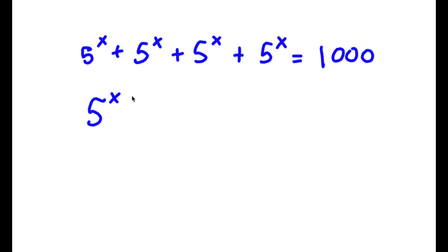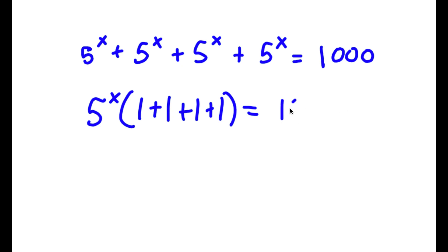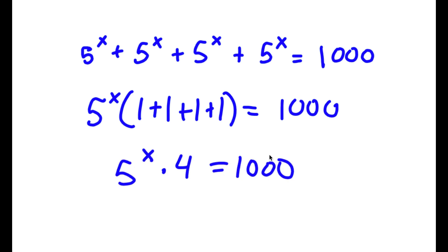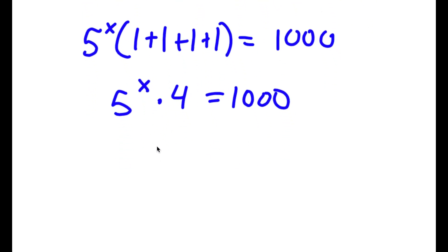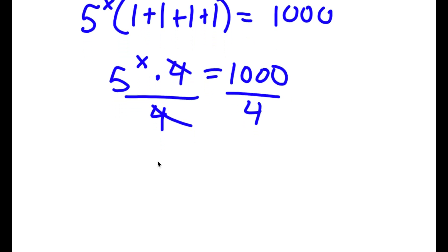So now I have phi to the power of x times 1 plus 1 plus 1 plus 1 is equal to 1000. Now 1 plus 1 plus 1 plus 1 is 4, so I have phi to the power of x times 4 is equal to 1000. Now if I divide both sides by 4, these two cancel out and I get phi to the power of x is equal to 250.